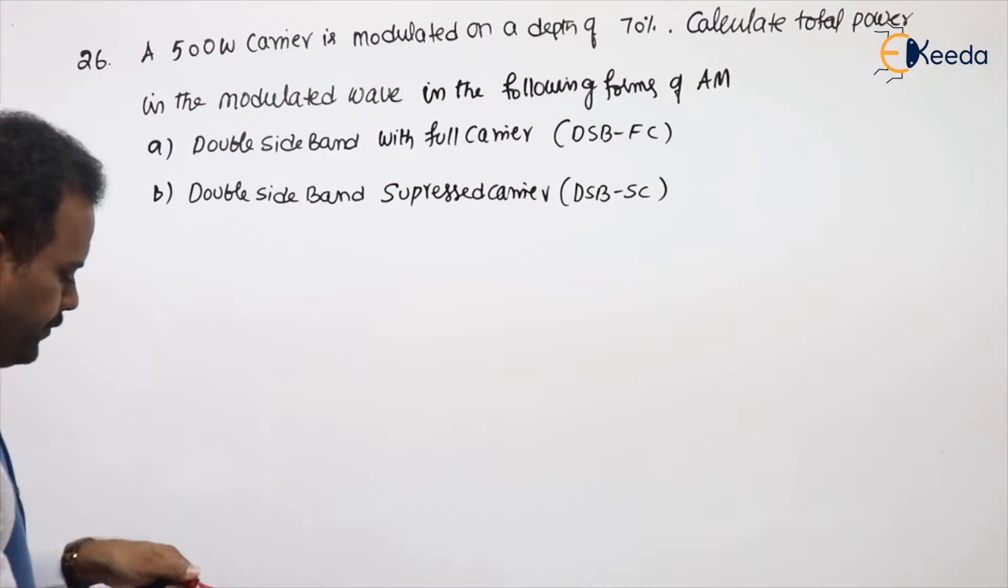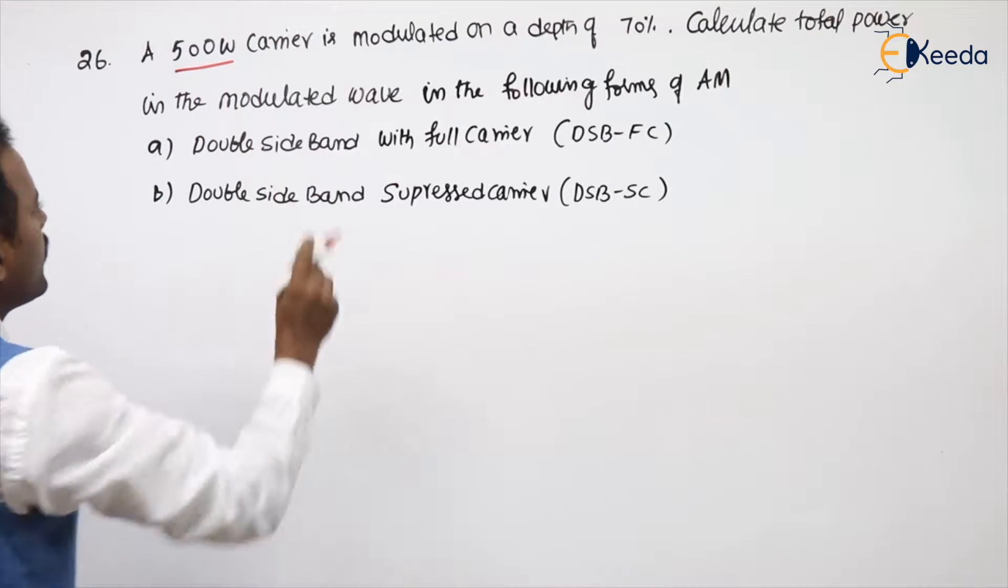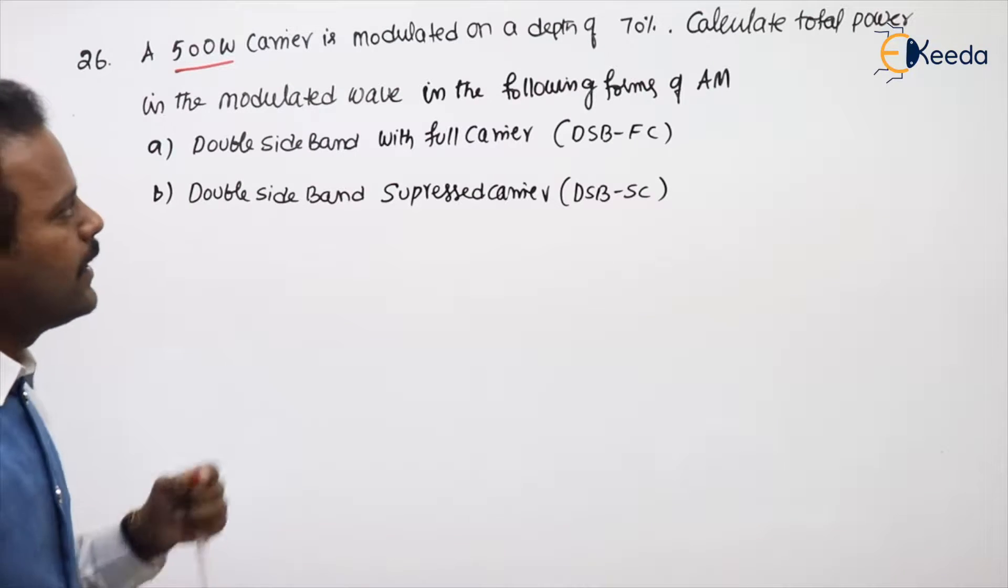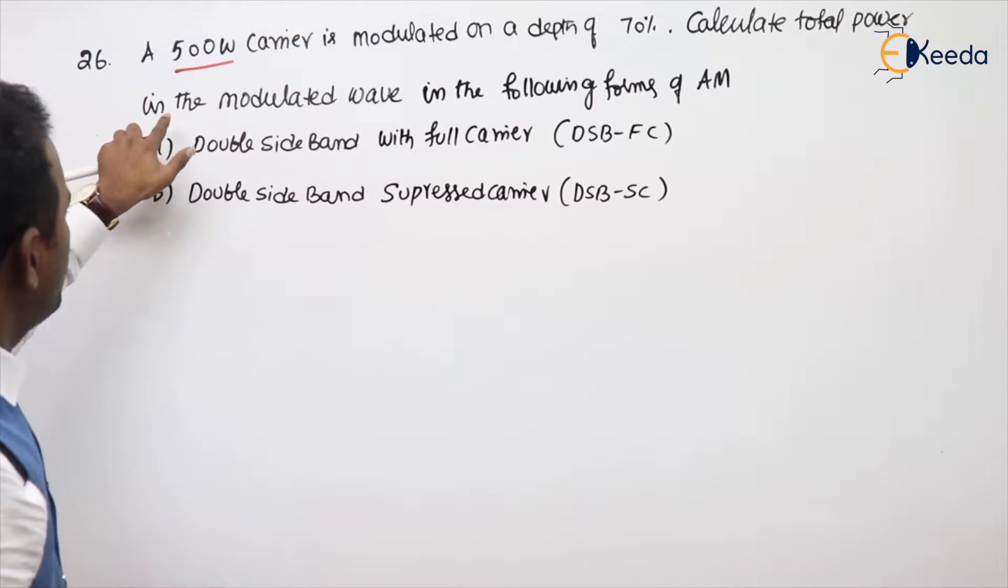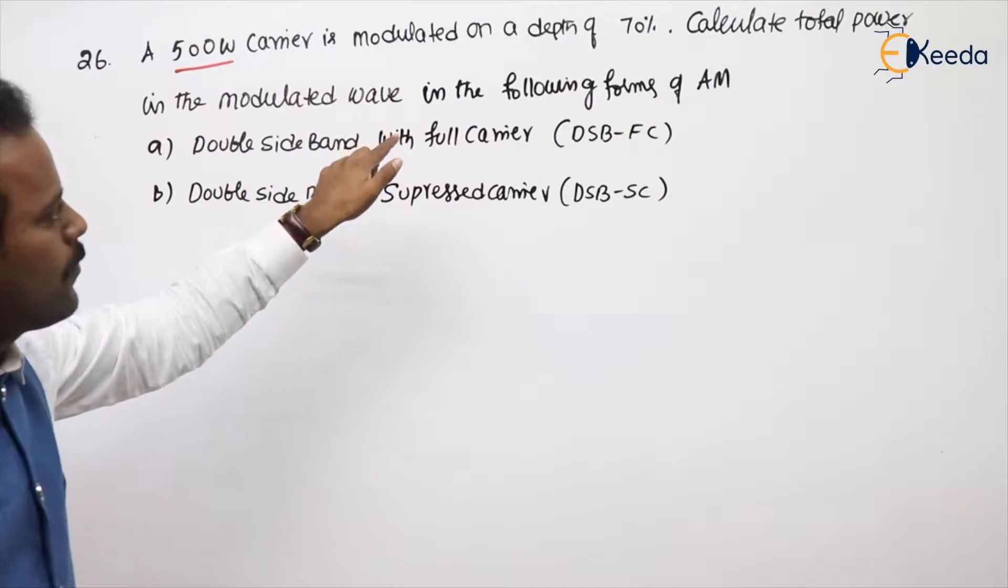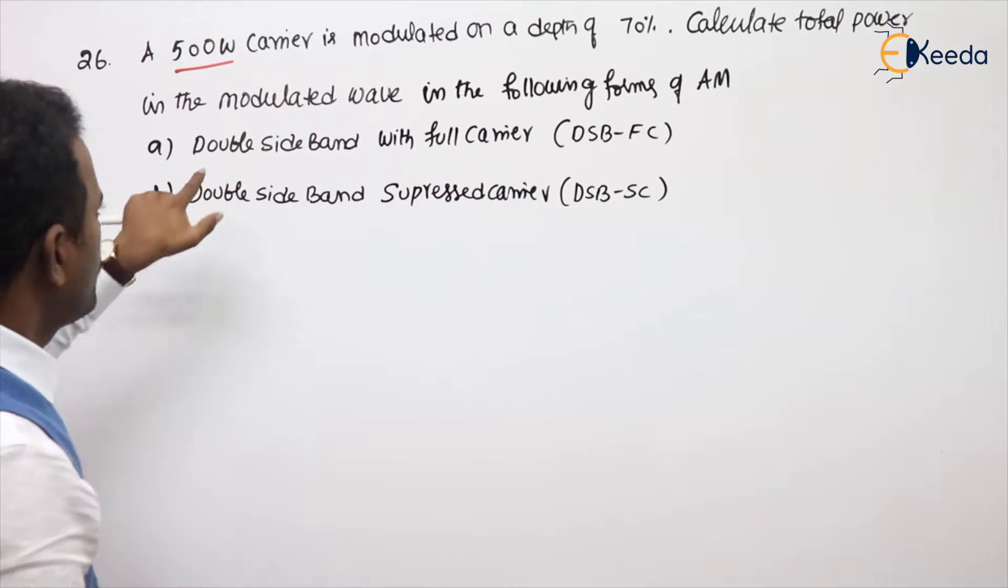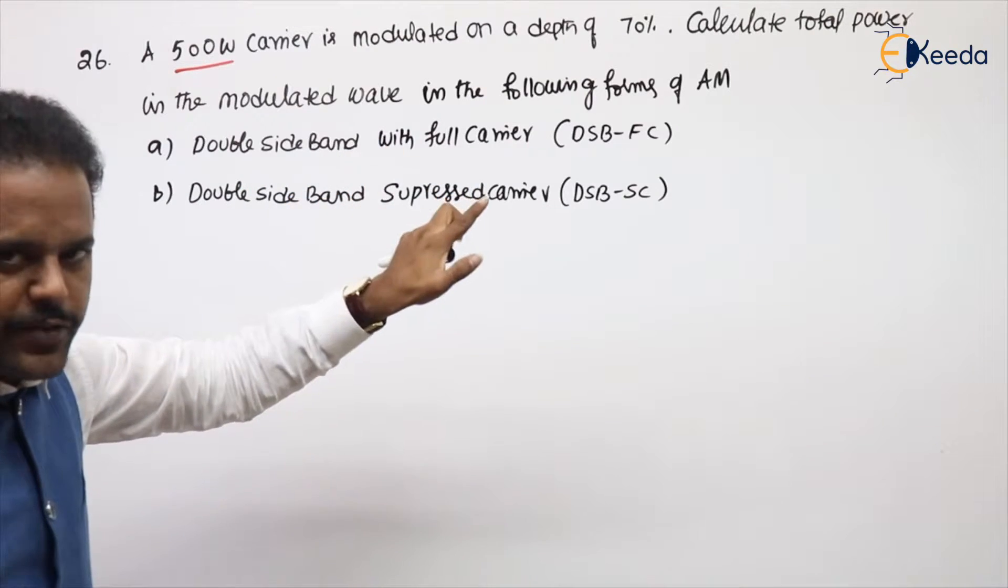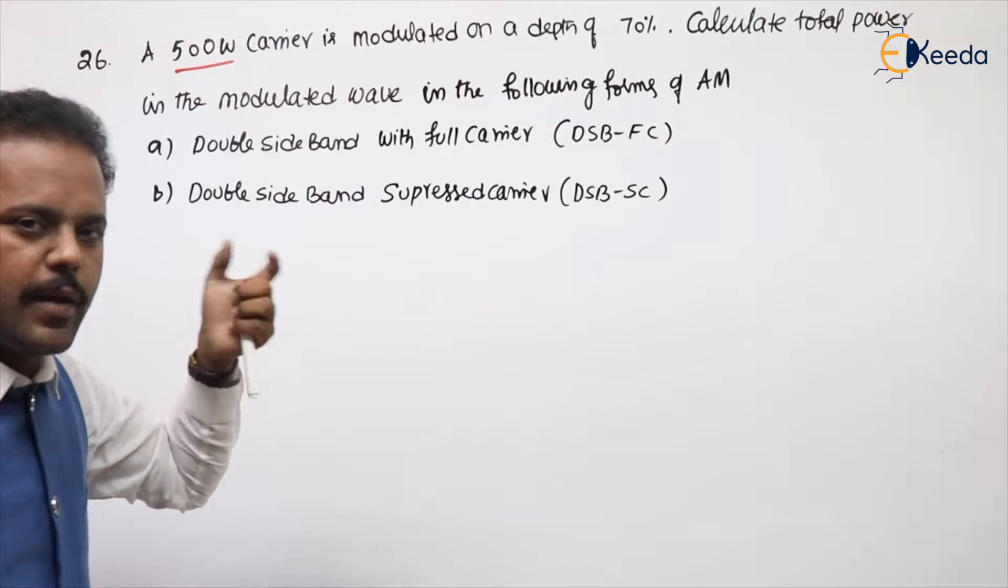A 500 watt carrier is modulated on a depth of 70%. Calculate total power in the modulated wave in the following forms of AM. First question, double sideband with full carrier, DSBFC. DSBFC or AM, both are same.